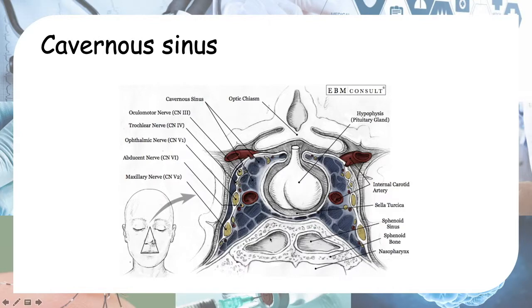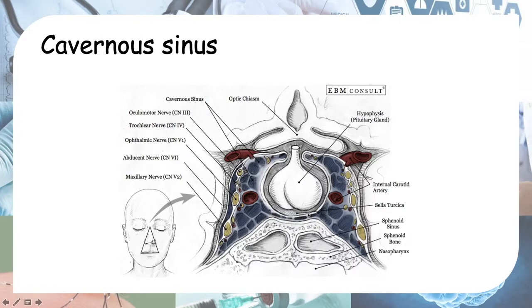When the cancer invades this area, all the structures within the cavernous sinus will be affected. The veins here, shown in blue, drain the superior and inferior ophthalmic veins, which drain blood away from the eyes. If the tumor occludes this drainage, it will cause proptosis — protrusion of the eye.